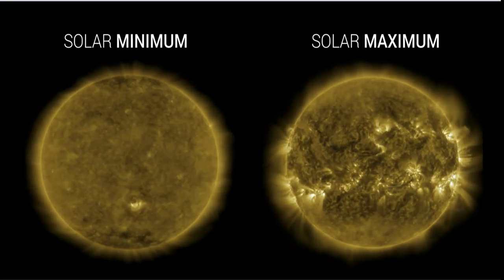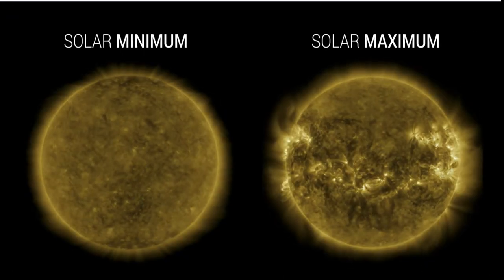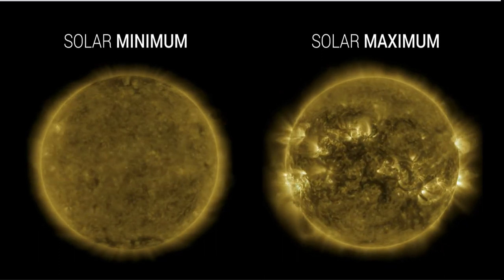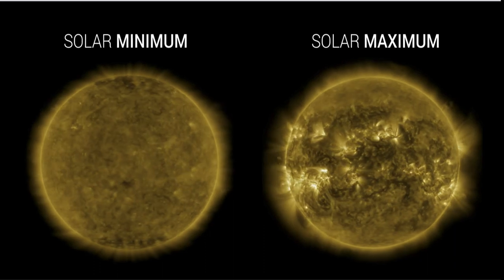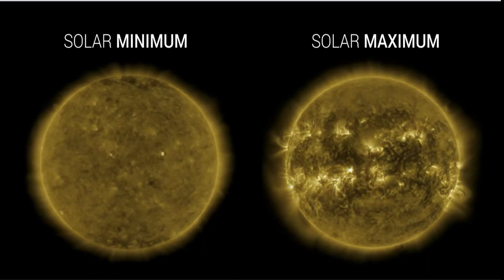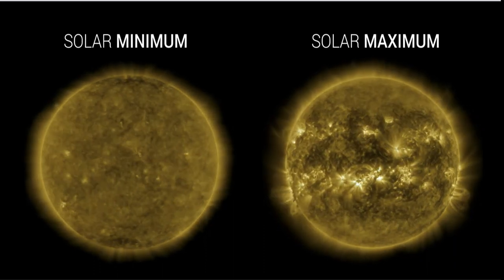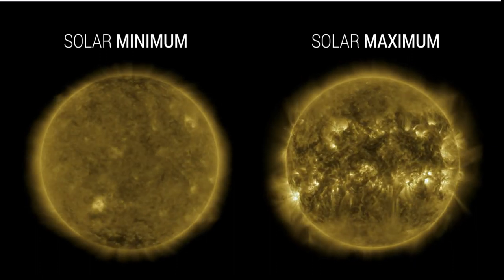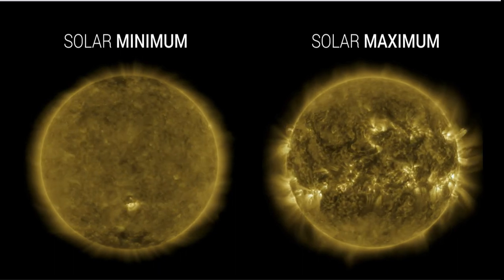On the left we see the sun near solar minimum, and there's very little activity going on. You can see a little bit in terms of prominences and material bulging out from different brighter areas, which are the higher active areas, but most of it is very calm with not a whole lot going on.